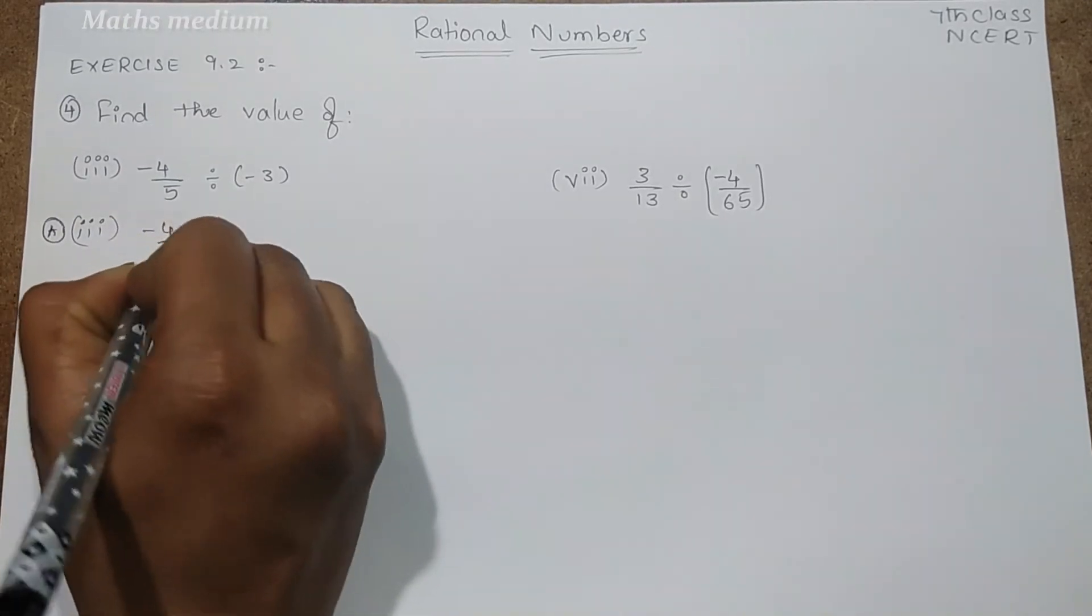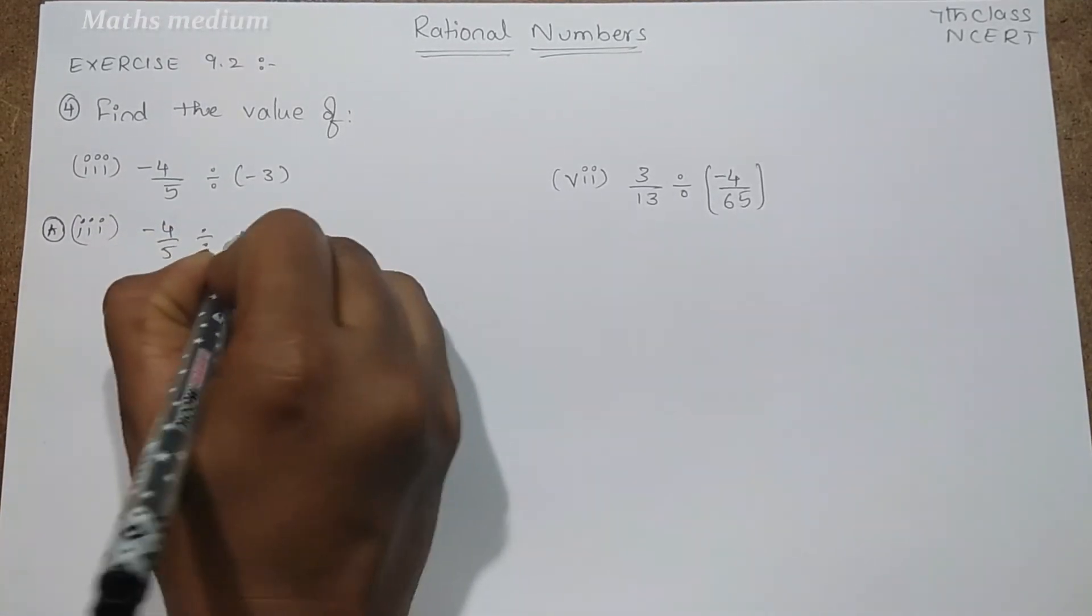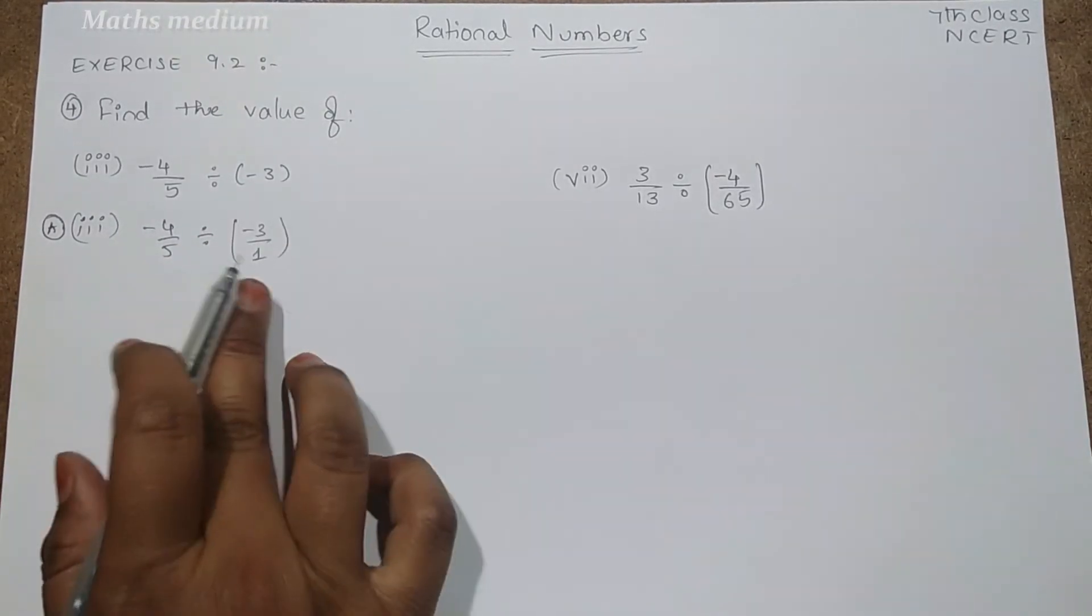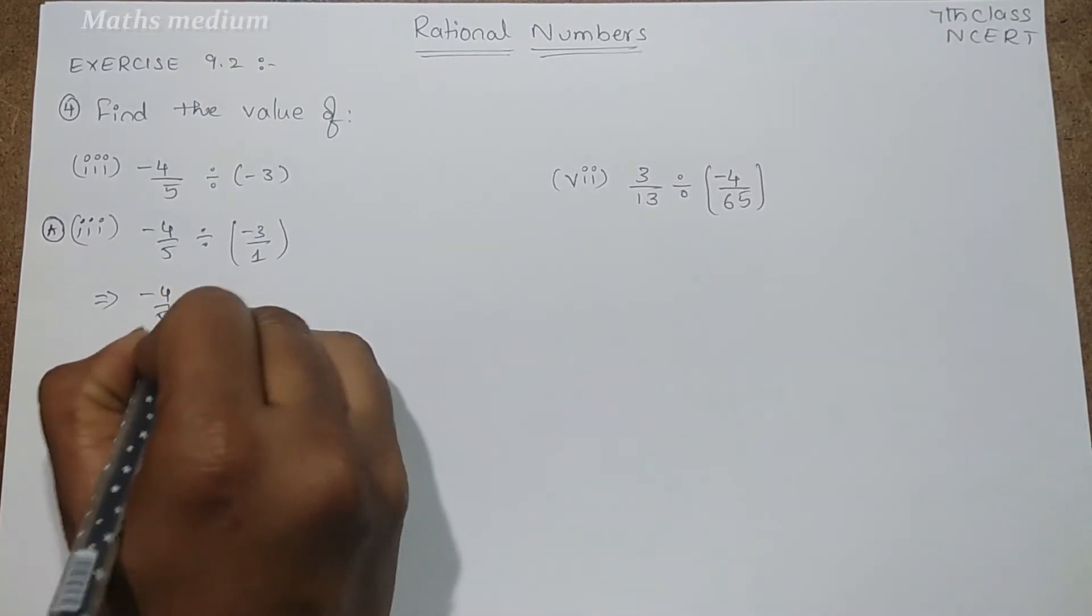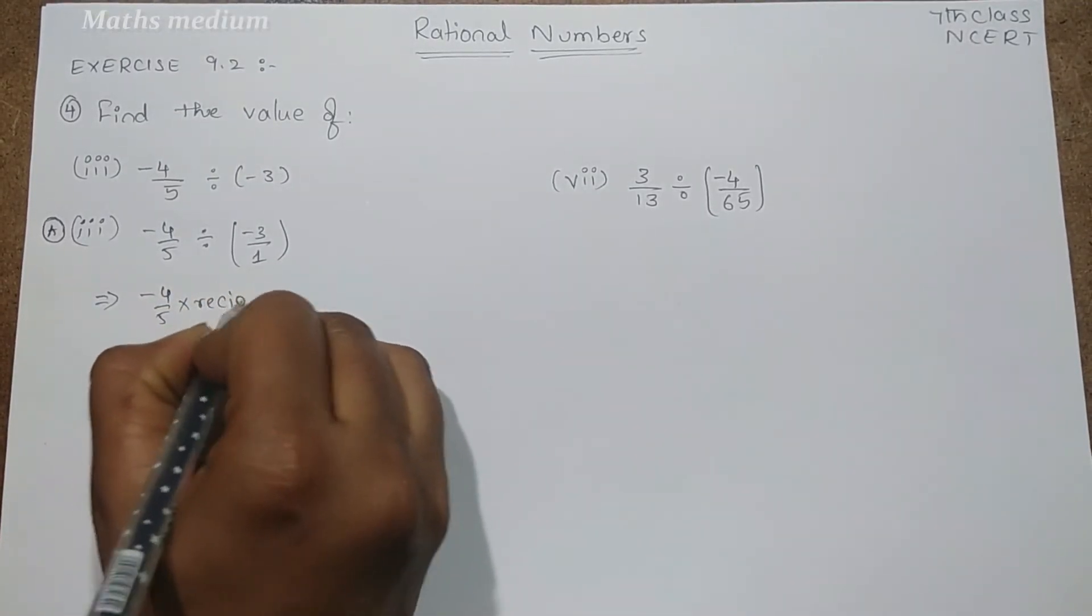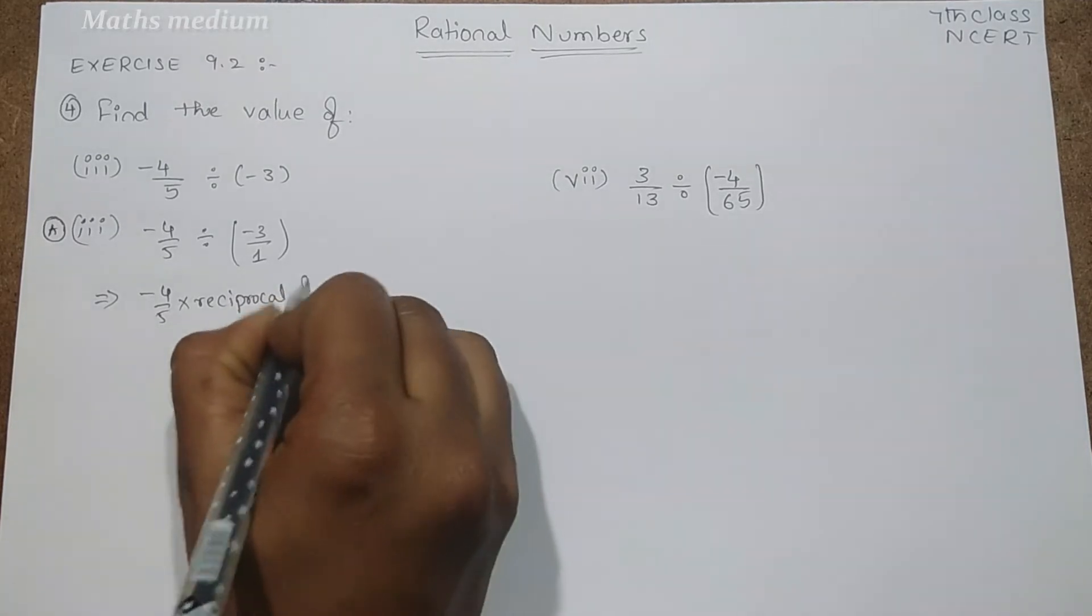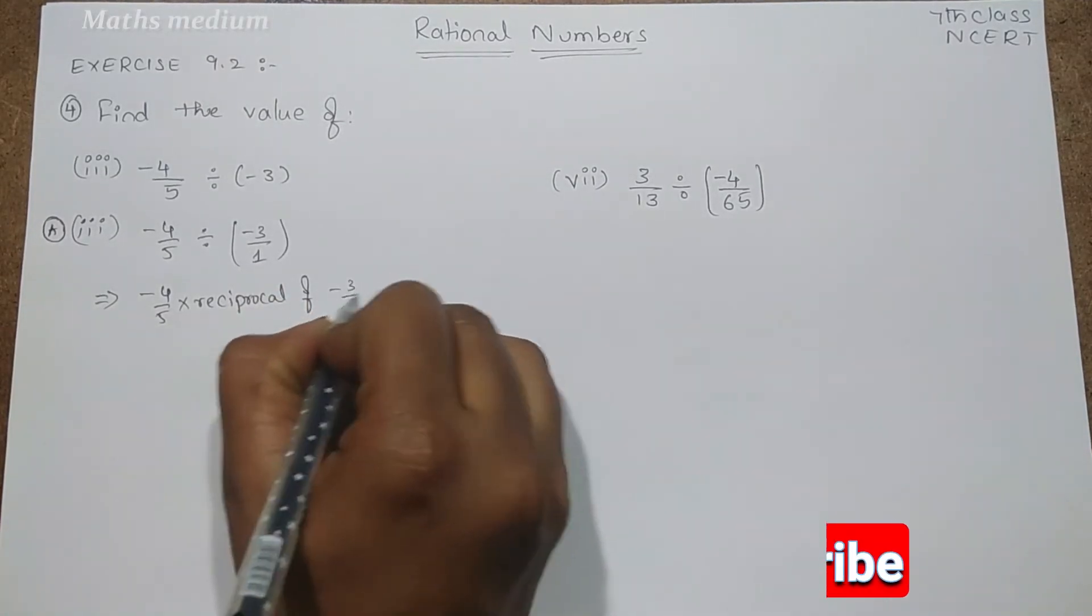So this is -4/5 divided by -3/1. We can write it like this: -4/5 into reciprocal of -3/1.